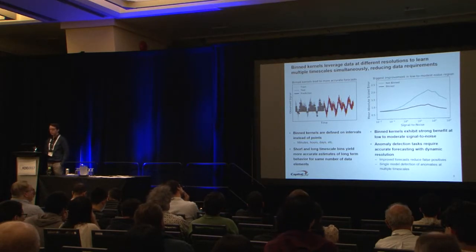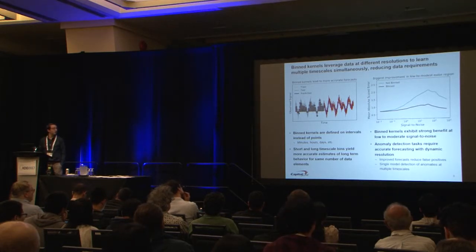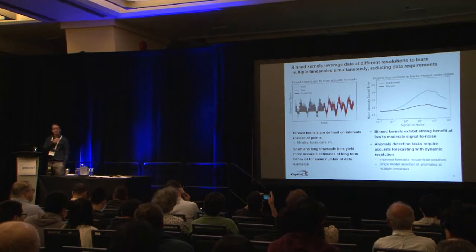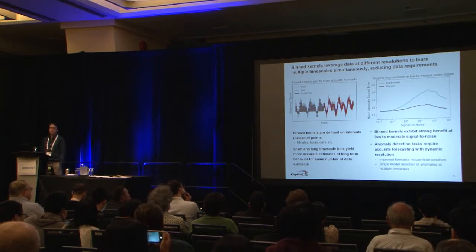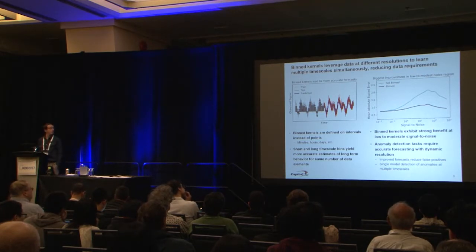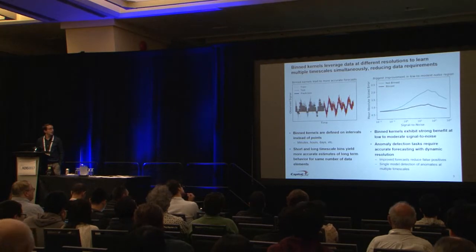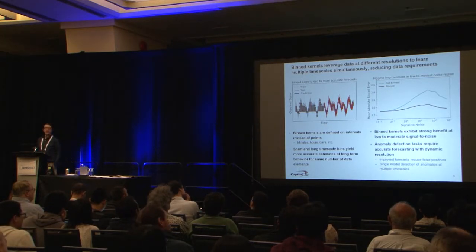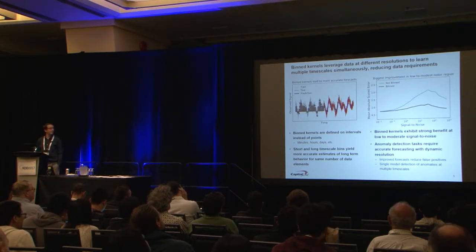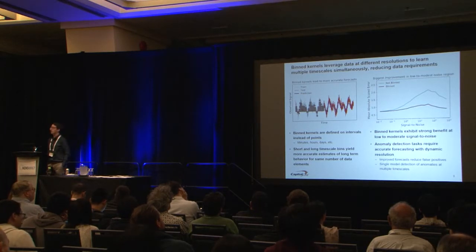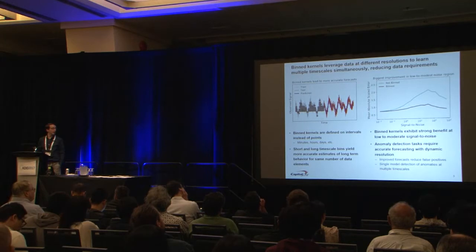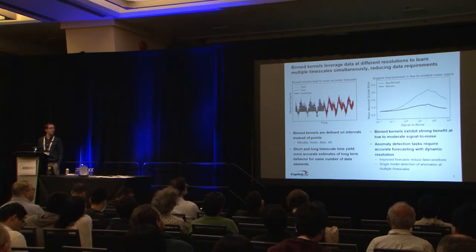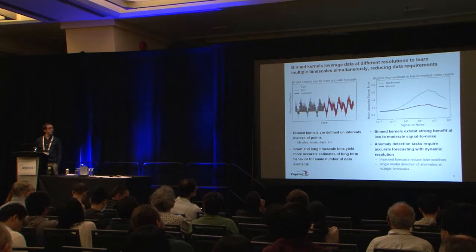Here's the same example shown before, but with the binned approach. I've swapped out half of those little points with larger bars, and these intervals cover the entire span of the training set — but it's the same number of data points, which is all the GP actually cares about. With the same number of data points, we can achieve a much better prediction. On the right is a survey to prove I haven't cherry-picked examples. On the y-axis is the mean absolute scaled error — a measure of how good the fit is; lower is better. The binned approach, especially in medium to low signal-to-noise, works quite a bit better than the non-binned approach.